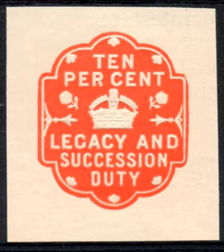Bovenberg and de Mooij argue that there is a first-best case scenario and a second-best case scenario. In the first-best case, the government does not need to get revenue from distortionary taxes such as the income tax, and the Pigovian tax can create the long-run social optimum. In the real-world second-best case, the status quo includes an income tax that distorts the labor supply, and Bovenberg and de Mooij write that the best tax comes in below the level of the Pigovian tax.